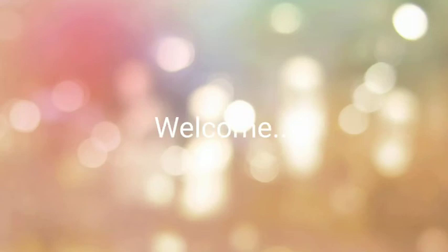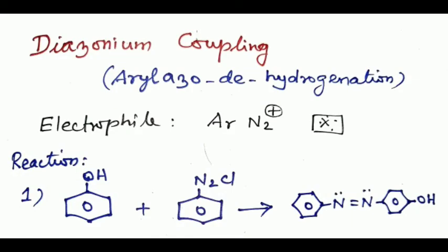In this video we will briefly discuss diazonium coupling, otherwise called aryl-azo dehydrogenation. The electrophile is the aromatic diazonium ion, ArN2+. The aromatic diazonium ion normally couples only with active substrates such as amines and phenols to form products, which are used as dyes.